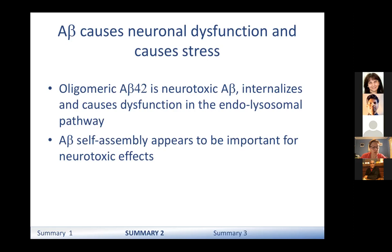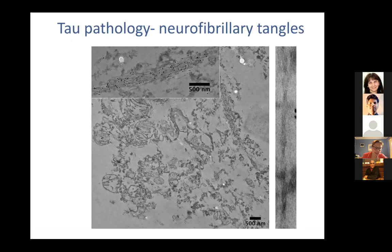We think Abeta self-assembly itself is very important for the neurotoxic effects. It seems to make sense that as Abeta oligomers go into the endolysosomal pathway, if they continue to self-assemble, that may be what's responsible for disruption of the membranes in those locations.